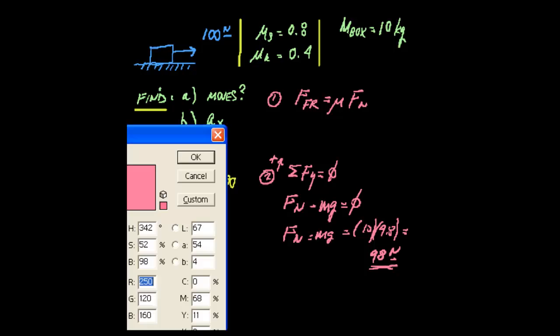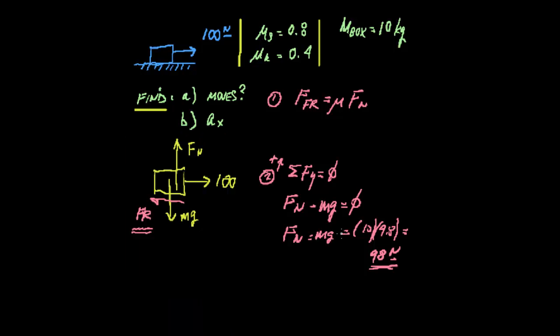Now that we have Fn, basically what the box weighs, we're going to take that value and we can put that back into our FUN equation and find out how much friction is present.